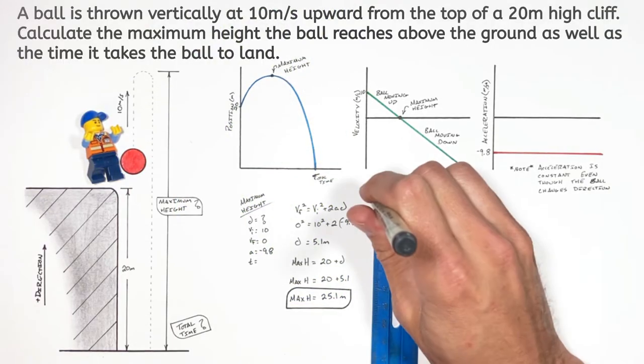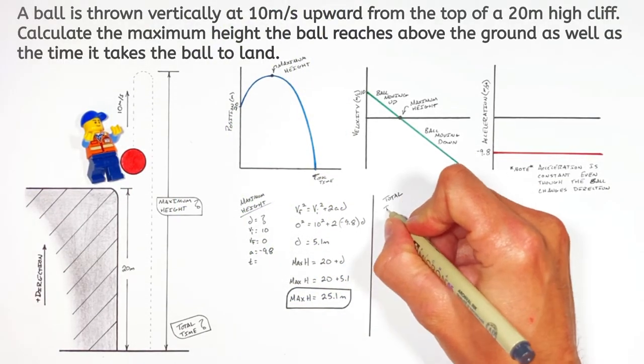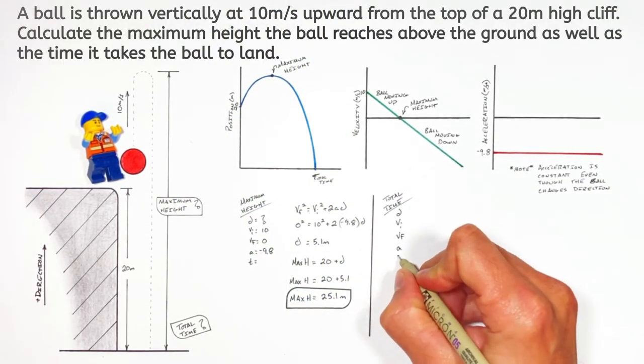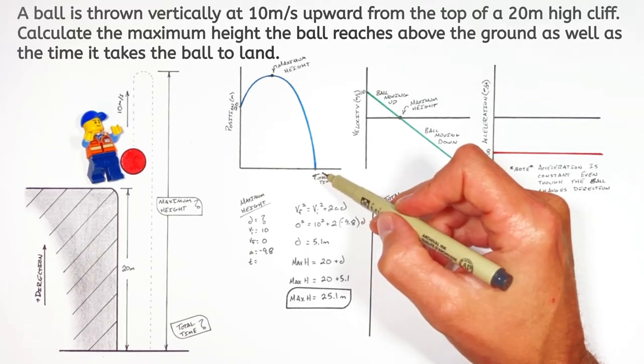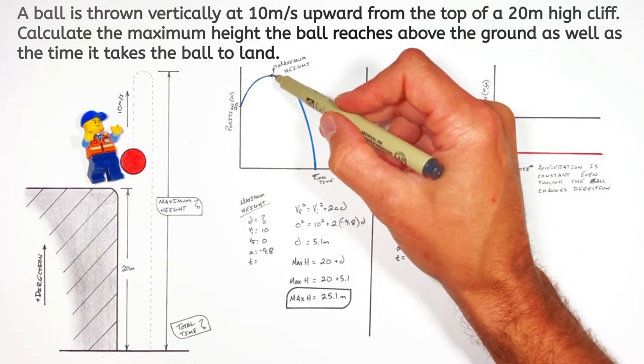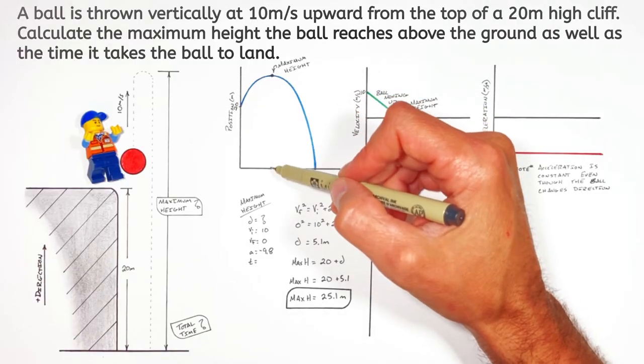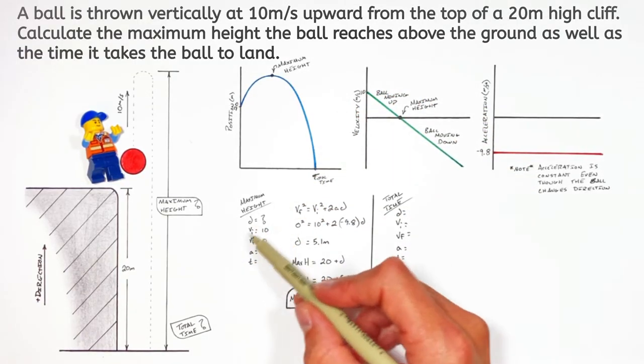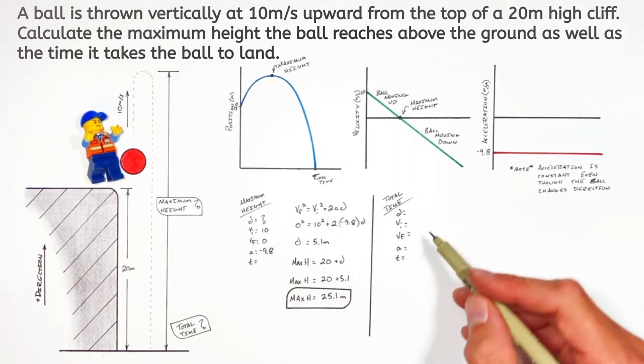Next, we'll move on to the total time. So again, setting up the five kinematic variables. Because the ball lands at a different point in time than when it reaches its maximum height, we have to set up a different set of five kinematic variables. We can't reuse the old ones from when we solve for maximum height.